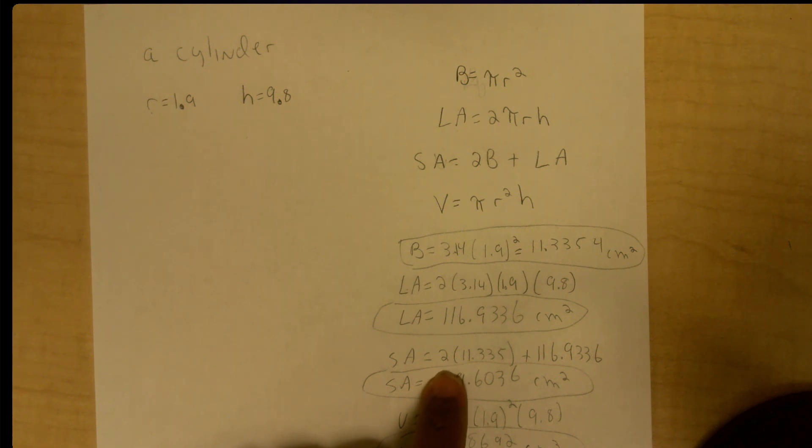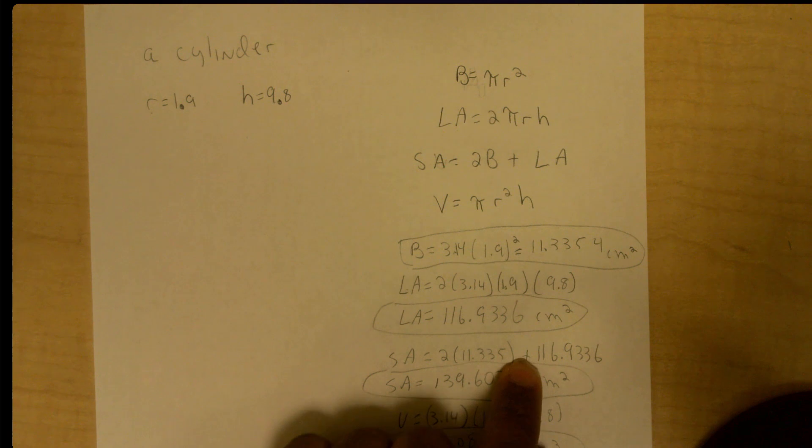Then I found my surface area, which is twice the base plus the lateral area. So twice the base plus the lateral area here, and that gives me my surface area in centimeters squared.